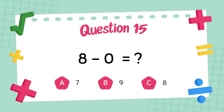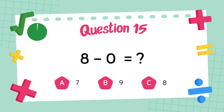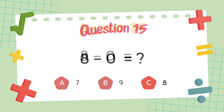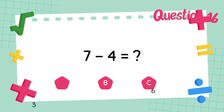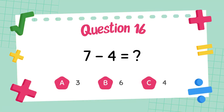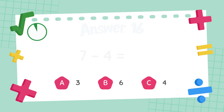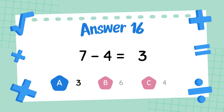What is 8 minus 0? The answer is 8. What is 7 minus 4? The answer is 3.